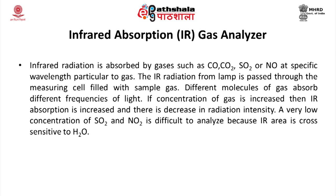Infrared radiation is absorbed by gases such as carbon monoxide, carbon dioxide, sulfur dioxide, and nitrogen dioxide at a specific wavelength particular to each gas. IR radiation from the lamp is passed through a measuring cell filled with the sample gas; different molecules absorb different frequencies of light. If the concentration of the gas increases, IR absorption increases and there is a decrease in radiation intensity. Very low concentrations of SO2 and NO2 are difficult to analyze because the IR area is cross-sensitive to water molecules.